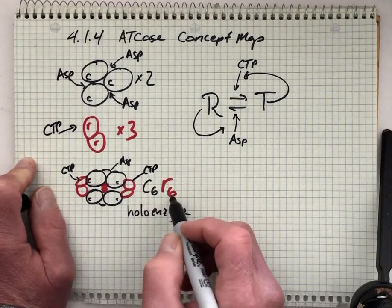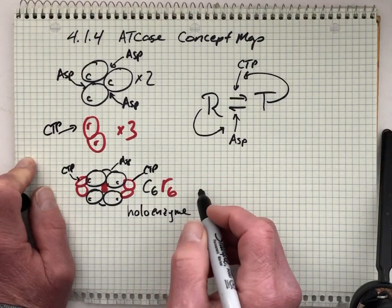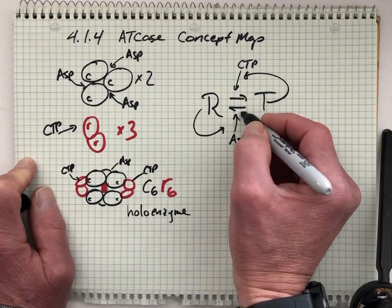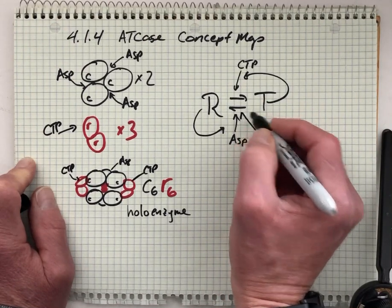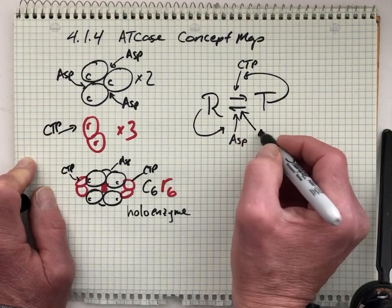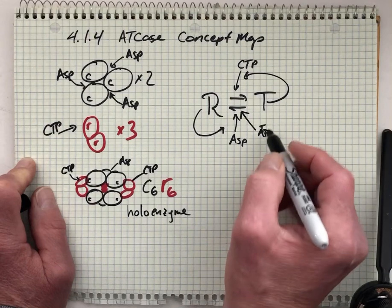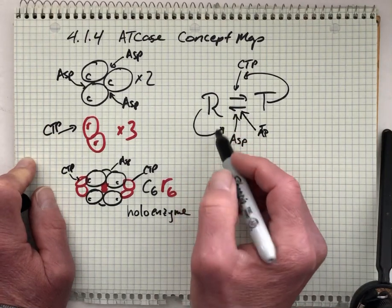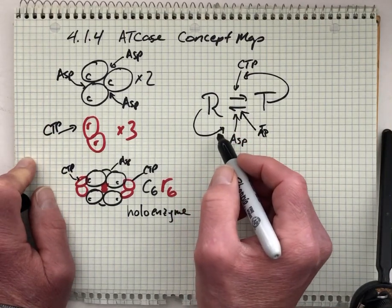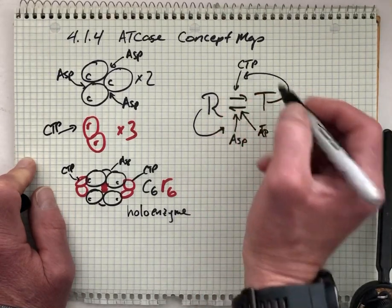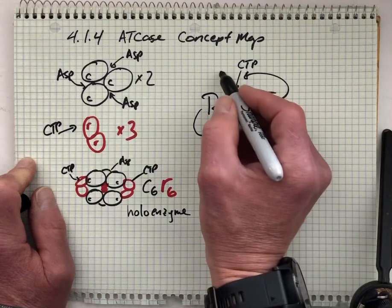And the binding of the nucleotide ATP will favor the R form of the holoenzyme. And additionally, it also competes with the binding of CTP.